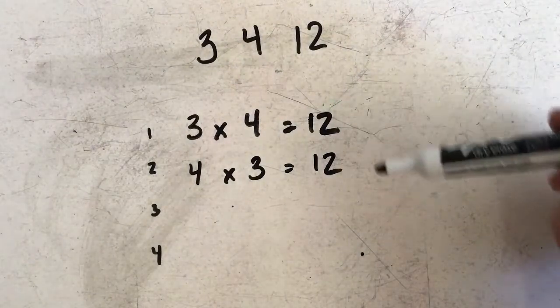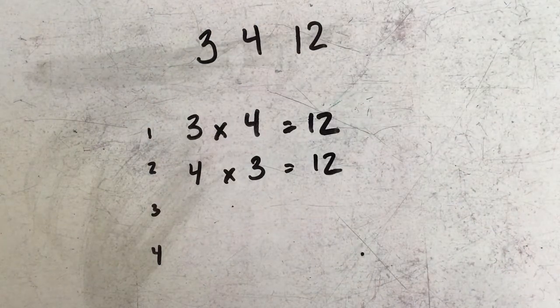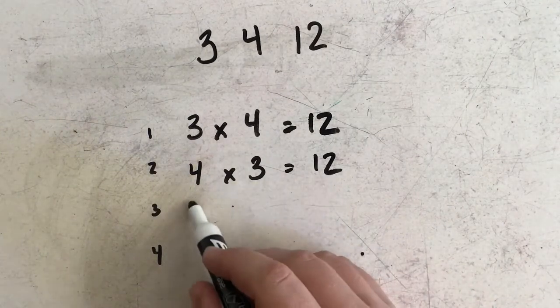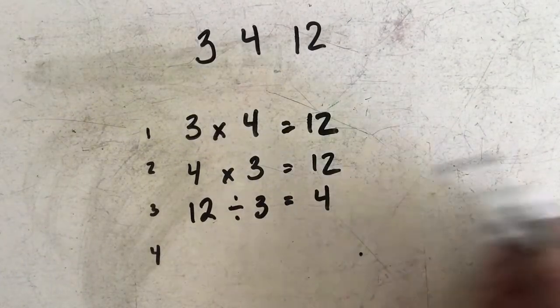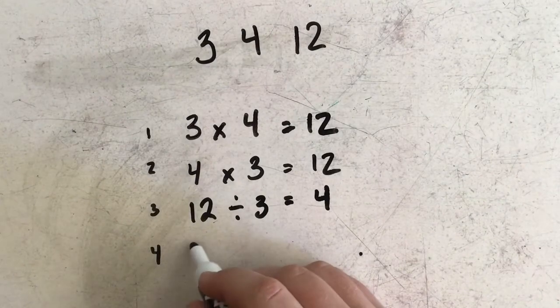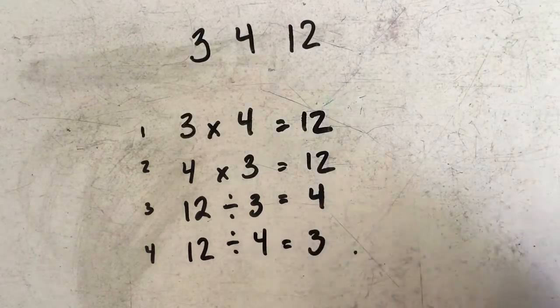Now in addition to multiplication, I can also form division sentences with these as well. In this case, I would start with 12, and I could say that 12 divided by 3 would be equal to 4. And then finally, I can also say that 12 divided by 4 is equal to 3.